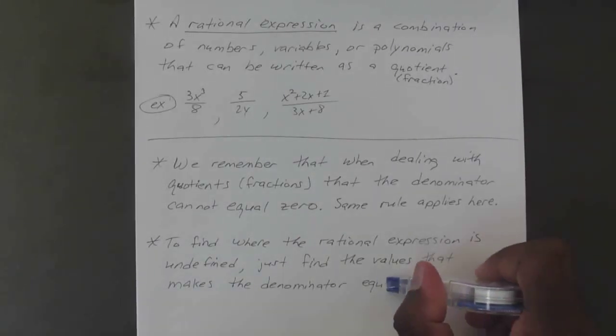We set both factors to zero: x minus 1 equals zero gives x equals 1, and x minus 2 equals zero gives x equals 2. So x can equal any number except 1 and 2 — it could be zero, it could be 1.5, it could be a billion — any number at all except those two, because those two values will make the expression undefined.